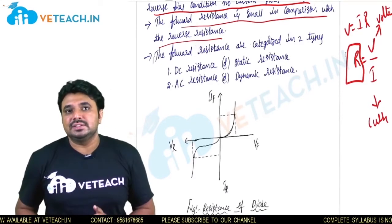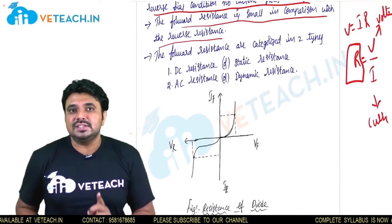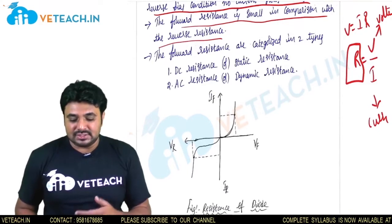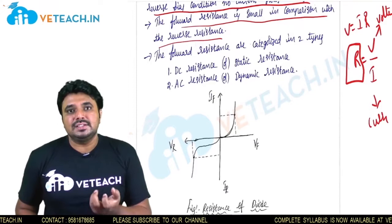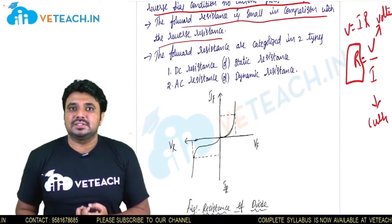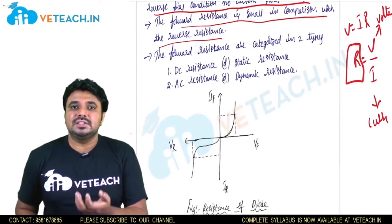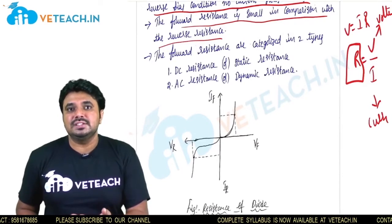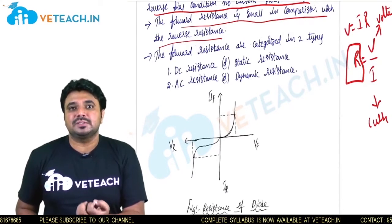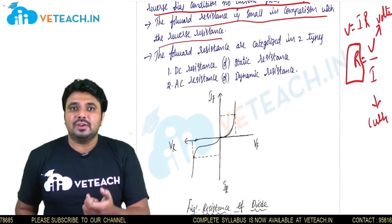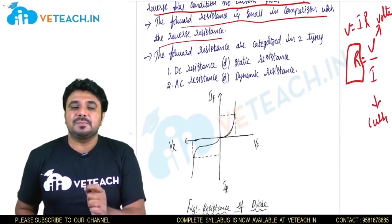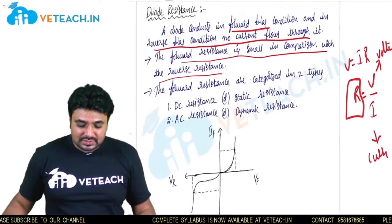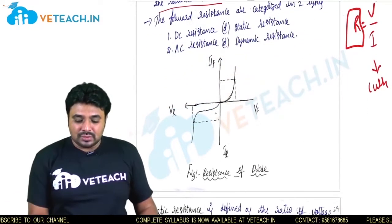In forward resistance, they are divided into two categories: DC resistance and AC resistance. DC resistance is also called static resistance, and AC resistance is also called dynamic resistance. AC resistance means the resistance which is changing with respect to change in voltage and change in current — that means changing with respect to time. DC resistance purely depends upon fixed voltage and fixed current.